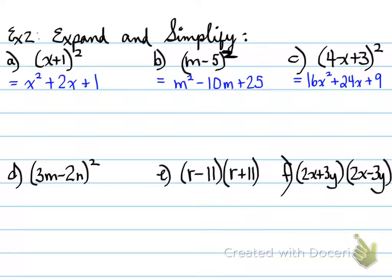Moving forward to part d: 9m² - 12mn + 4n². 3m all squared is 9m². 3m times -2n is -6mn, times 2 is -12mn, and then the last part is 4n².